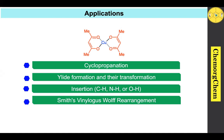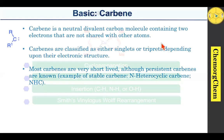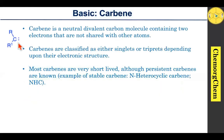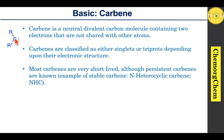Before moving to the applications of copper acetylacetonate, we should know what a carbene is. A carbene is a neutral divalent carbon molecule which contains two unshared electrons. This type of species is called a carbene. Carbenes are also classified into two types: singlet or triplet carbene, depending upon their electronic arrangement. Most carbenes are very short-lived; however, some stable carbenes are also known, such as N-heterocyclic carbenes.